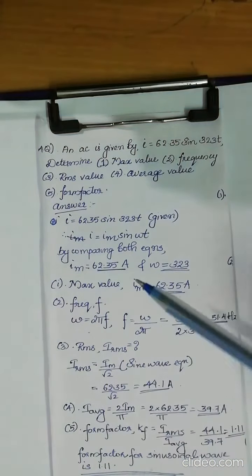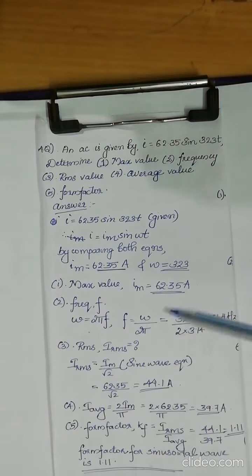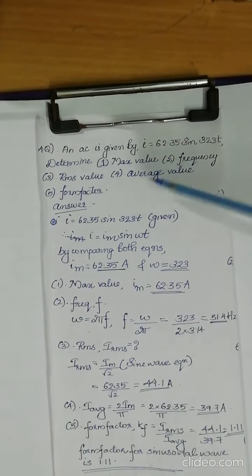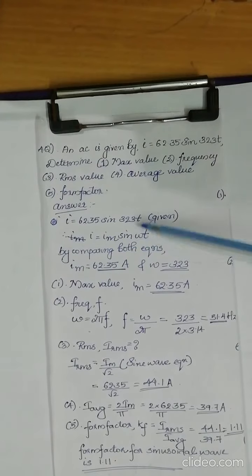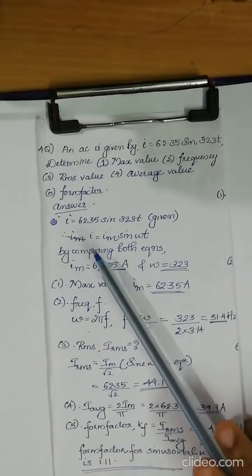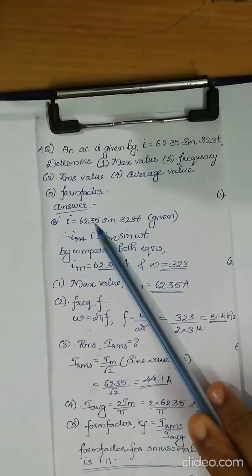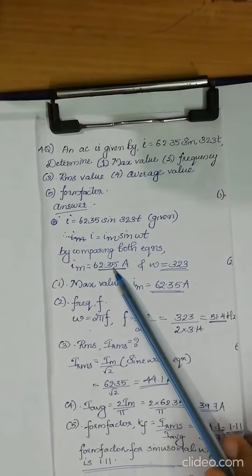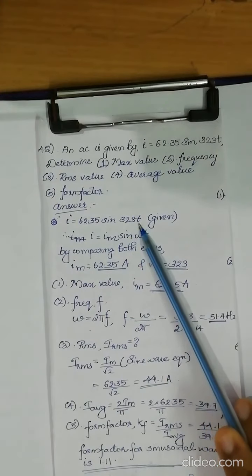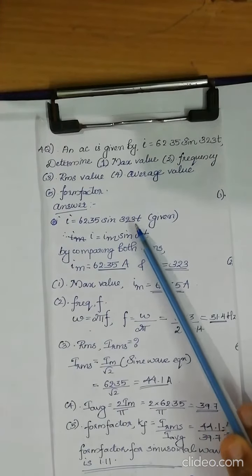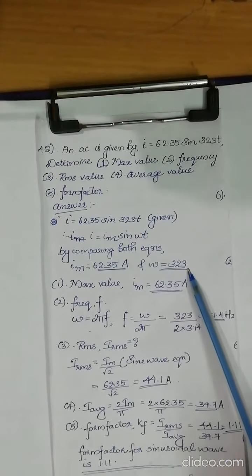Then we can see how we can find the maximum value, RMS value, and average value. Since the given signal is in the form of i equals im sin omega t, by comparing these two equations we can obtain im. The maximum current value is 62.35 and omega t is equal to 323t. That is, omega is equal to 323.